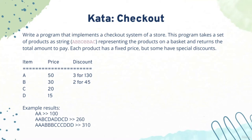Each item has a fixed price: A is 50, B is 30, C is 20, and D is 15. But products A and B have some discounts. Whenever you get 3 A's, you get a discount of 20 currency units — you pay 130. And if you get 2 B's, instead of 60 you pay 45 only.